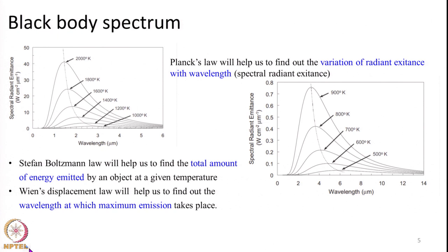In this slide we have two graphs showing the amount of electromagnetic radiation emitted by objects at various temperatures, ranging from 1000 Kelvin to 2000 Kelvin. As temperature increases, the amount of energy emitted by an object increases, as given by Stefan-Boltzmann law. These curves do not intersect — at any given wavelength, the energy emitted by an object at a higher temperature is always greater. Each point on these curves is estimated using Planck's law.